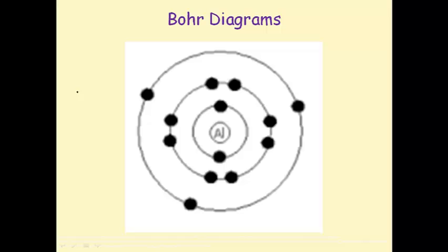Board diagrams show how many electrons appear in each electron shell around an atom. For the first 20 elements, the maximum number of electrons in the first shell is 2, in the second shell is 8, and in the third shell is 8.